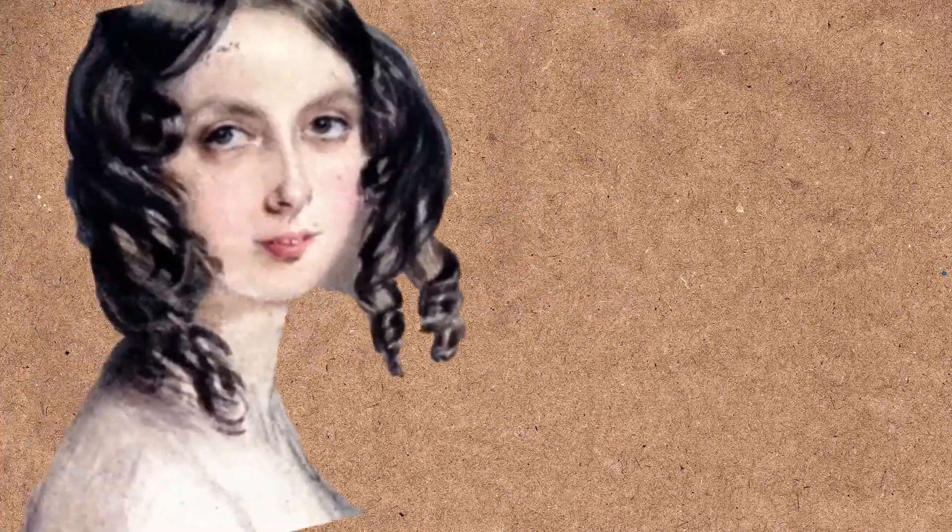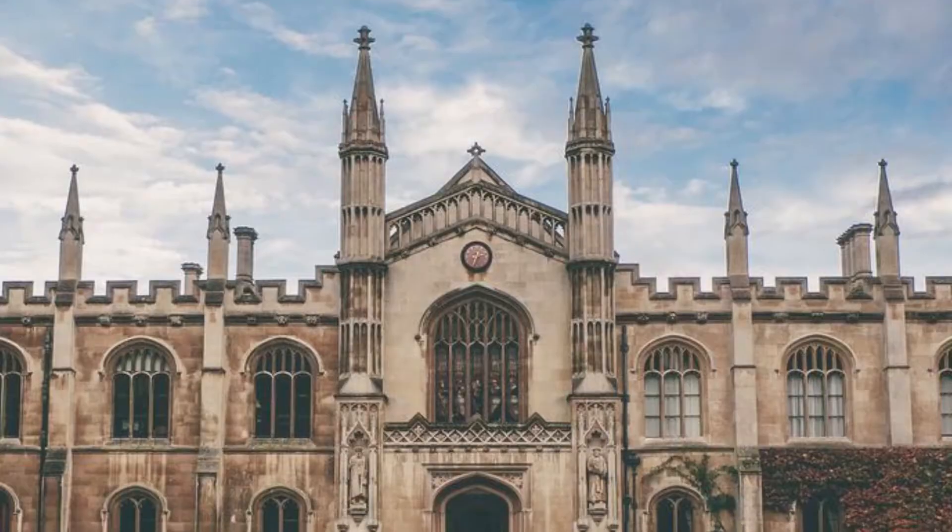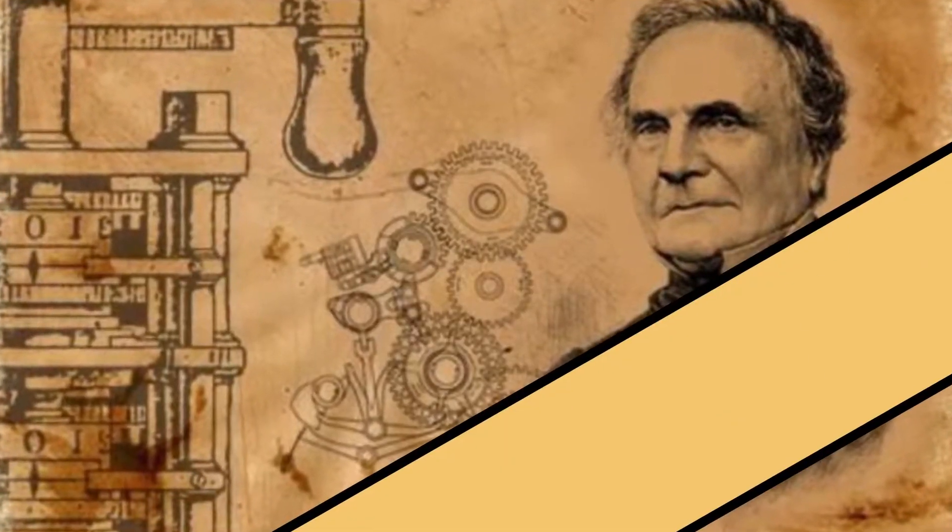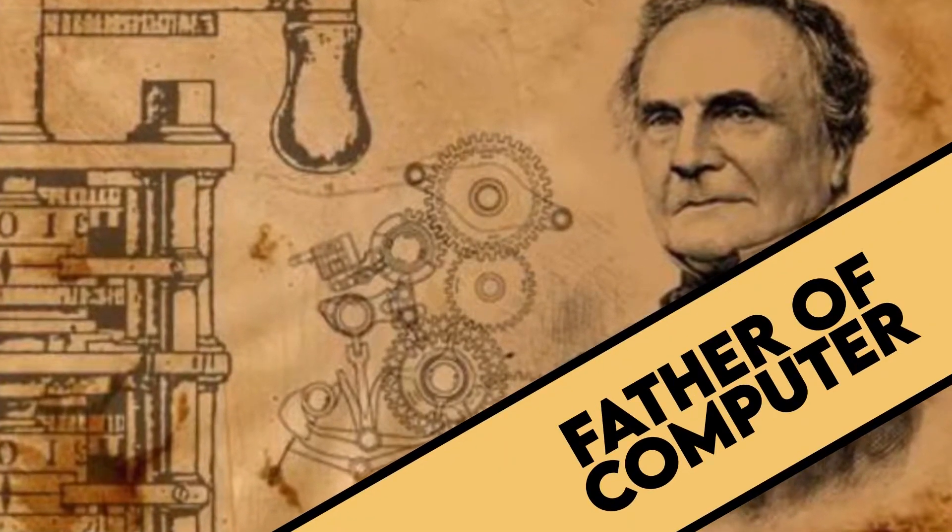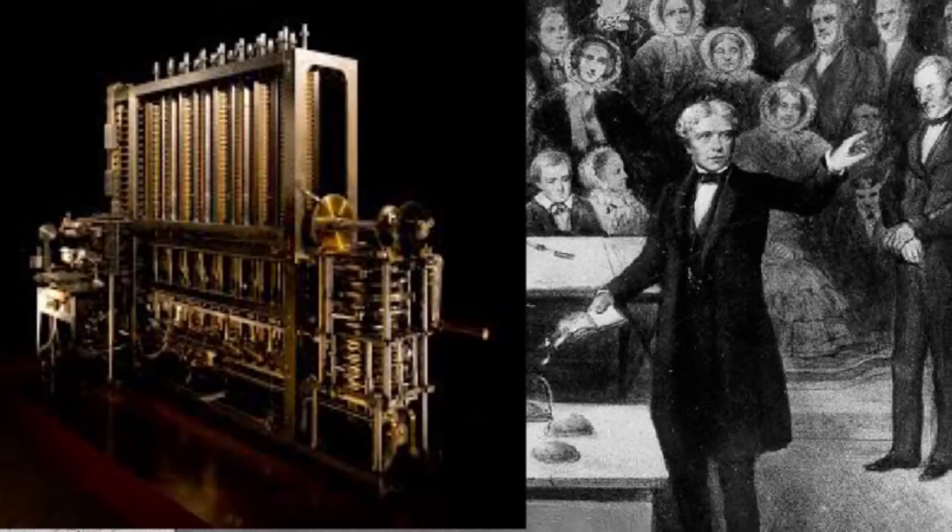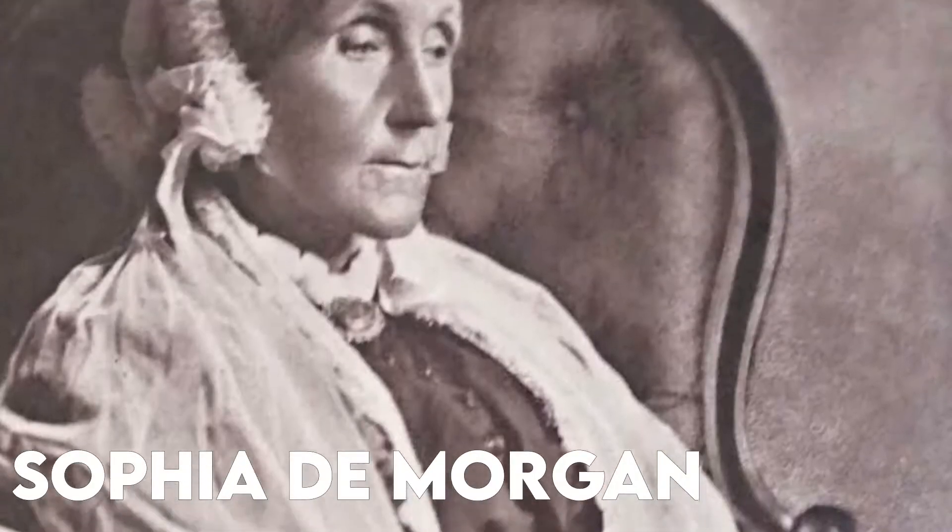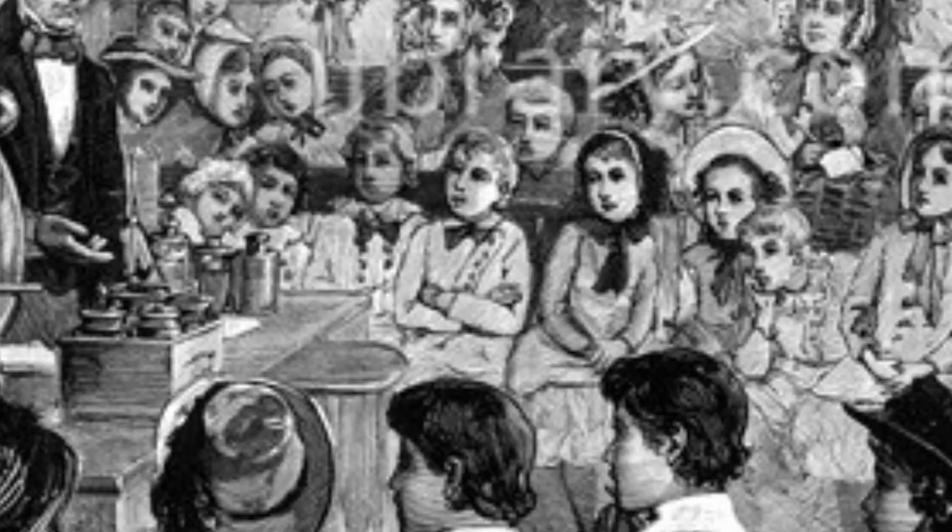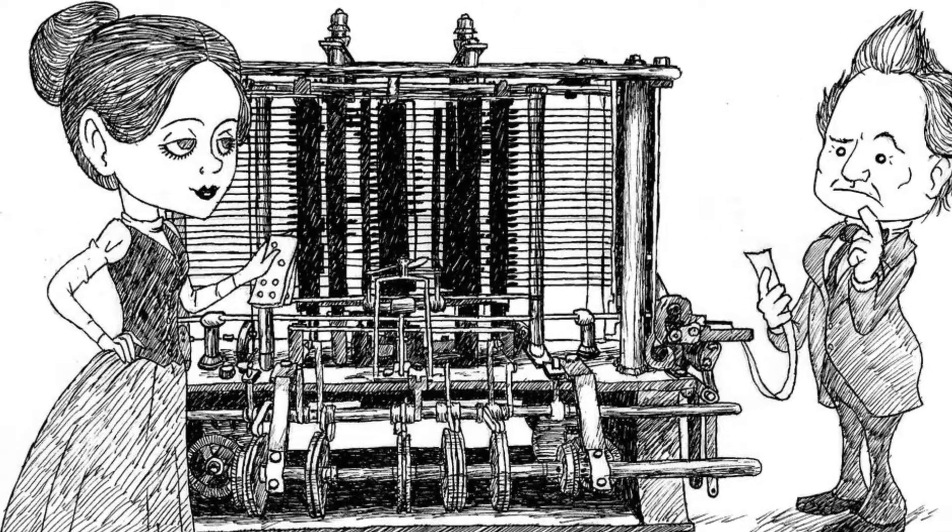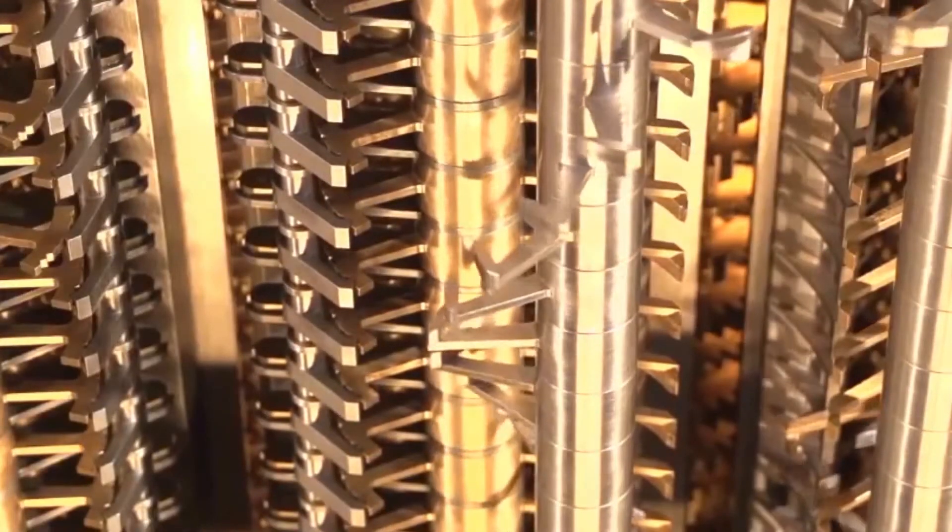In 1833, 17-year-old Ada was introduced to Charles Babbage, a mathematics professor at Cambridge University, who today is commonly recognized as the father of the computer. Babbage unveiled a small part of his latest machine, a massive mechanical calculator known as the difference engine, at a small gathering. De Morgan's wife wrote: 'When most of the guests looked on with the expression that savages show on seeing a looking glass, Miss Byron, young as she was, understood its working and saw the great beauty of the invention.'